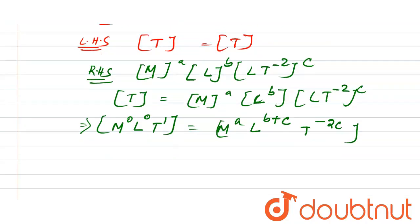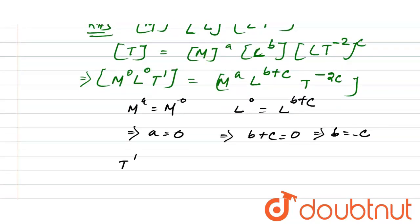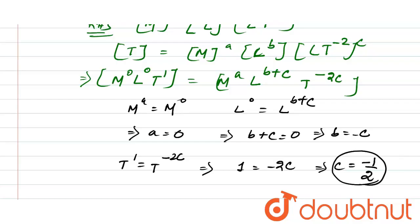Equating the powers from left-hand side to right-hand side: for M, a = 0; for L, b + c = 0, so b = -c; for T, 1 = -2c, which gives c = -1/2.